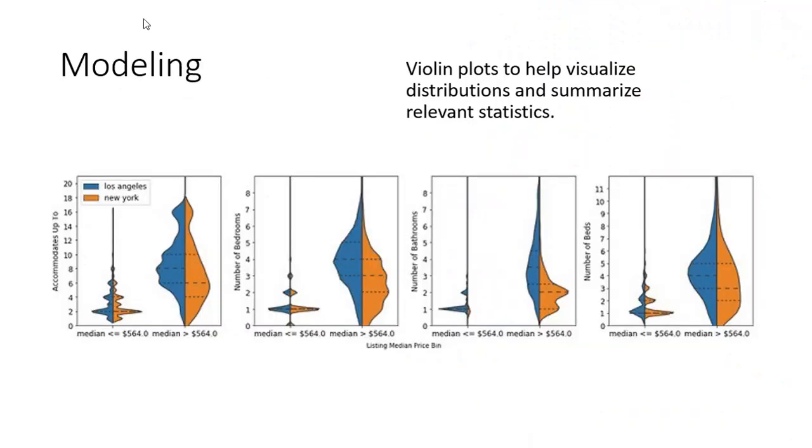As we look at the modeling phase, sometimes graphics help us to visualize the data to understand it. This first graphic here is accommodations. Blue is for Los Angeles. Orange is for New York. This first violin plot is for median price less than or equal to $564. The second one is for greater than $564. So we note that there are a lot more entries, a lot more data points, for more than $564.